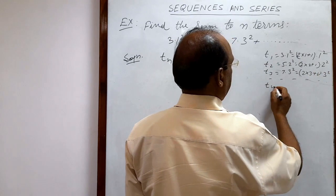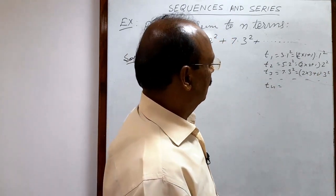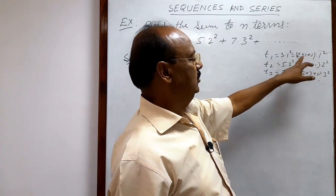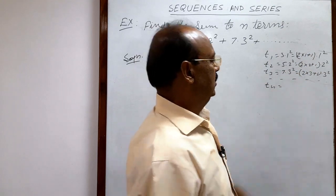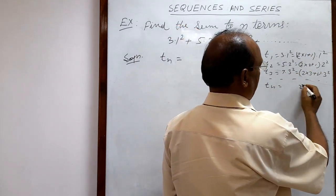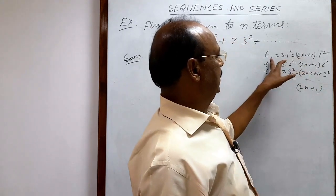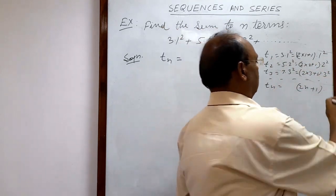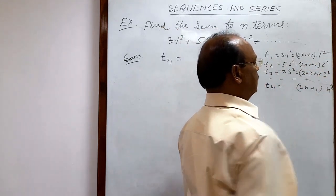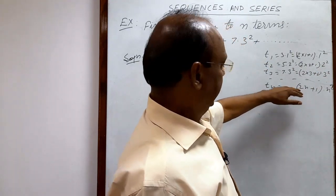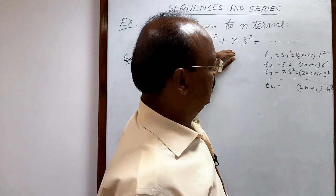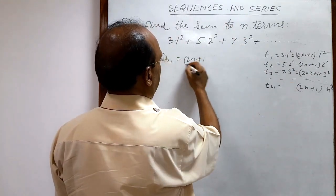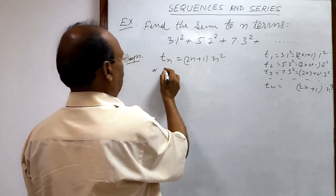So in general, the nth term Tn can be written as 2n plus 1, into n square. The coefficient pattern is 2 into 1, 2 into 2, 2 into 3, giving 2n plus 1, and the squared part goes 1 square, 2 square, 3 square, giving n square. So Tn equals 2n plus 1 into n square.